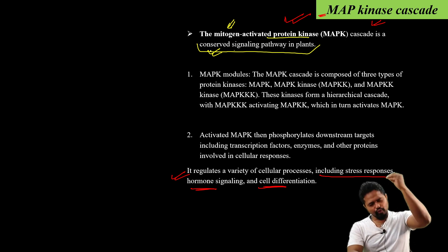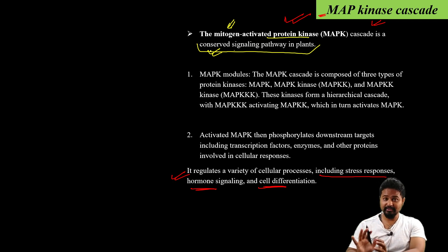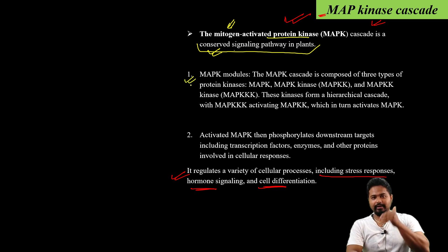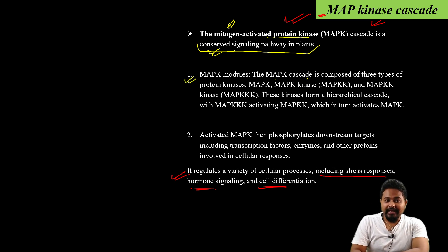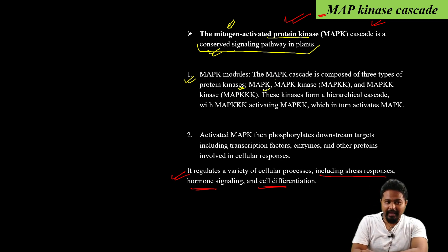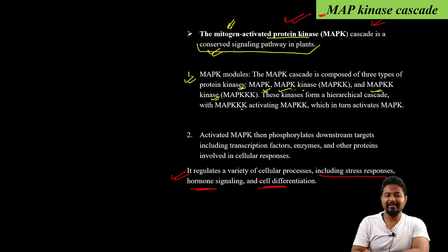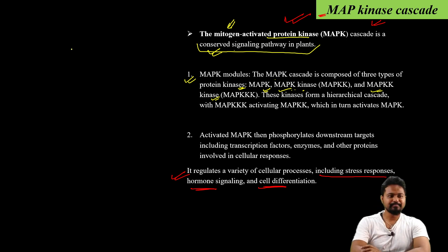This MAP kinase pathway is very important. It involves MAPKKK (MAP kinase kinase kinase) and MAPKK (MAP kinase kinase). These kinases form a hierarchical cascade, with MAPKKK activating MAPKK, which in turn activates MAPK.